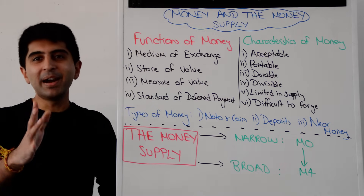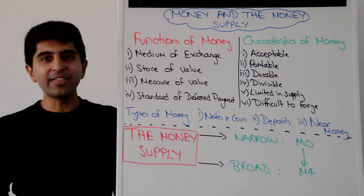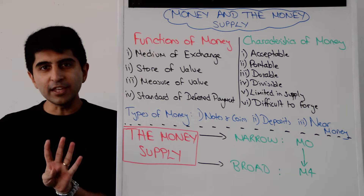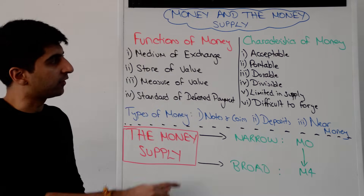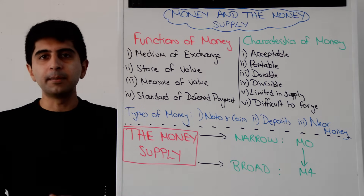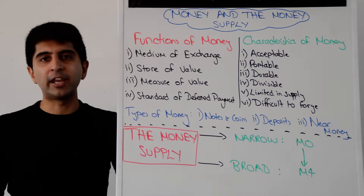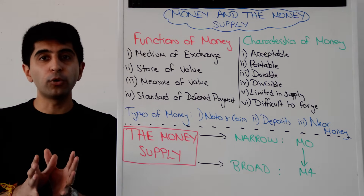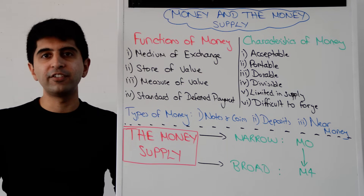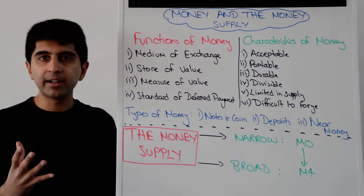Hi everybody. Money can be anything as long as it satisfies these four functions. It's got to be accepted as a medium of exchange, and that's really important because the only other option we have is to barter.